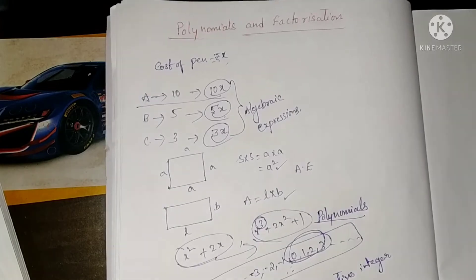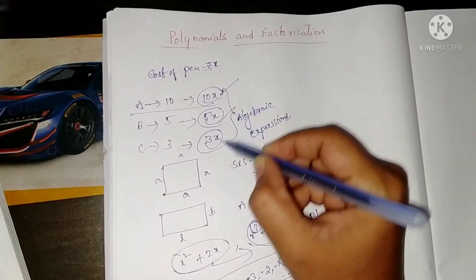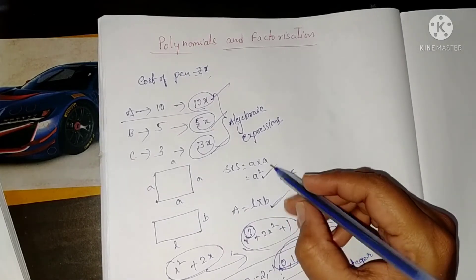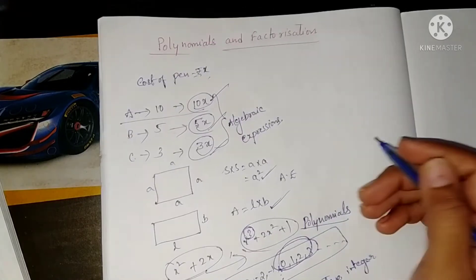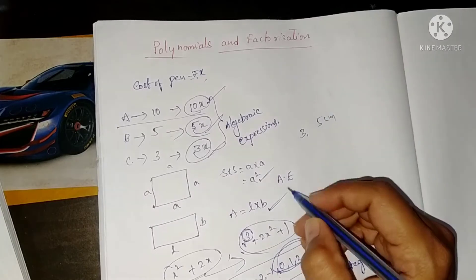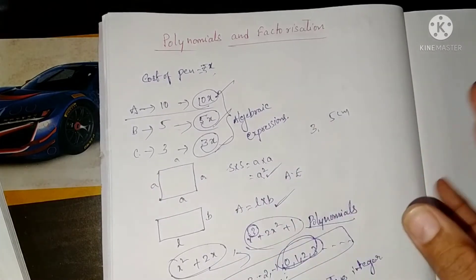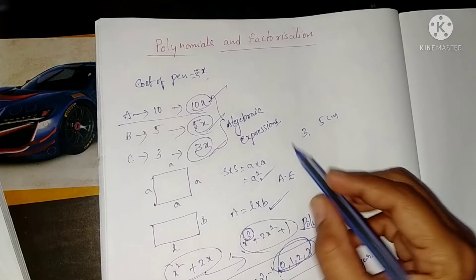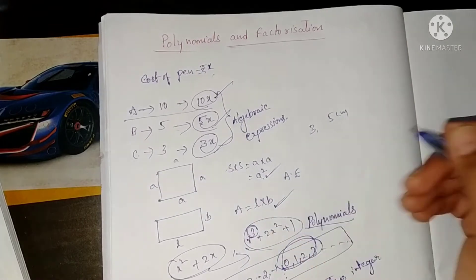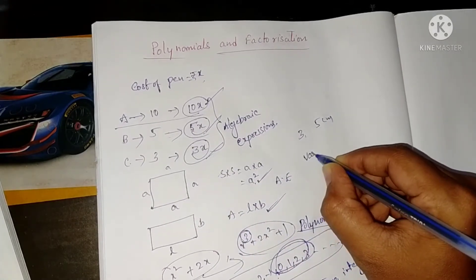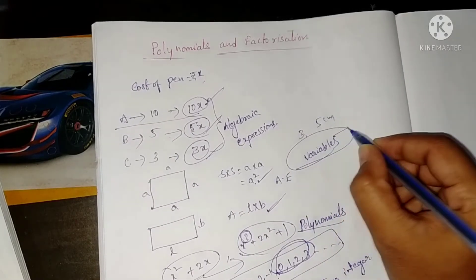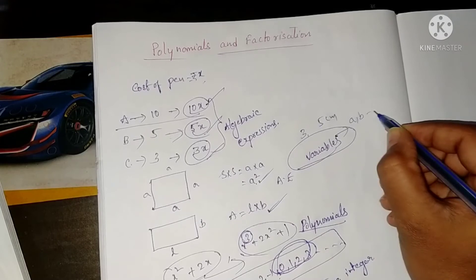In all these examples — 10x, 5x, a², l × b — observe that the value of a keeps changing. In one problem it may be 3, in another it may be 5 centimeters. Based on the problem and situation, the values of a, b, l, and x are changing — so those are called variables.